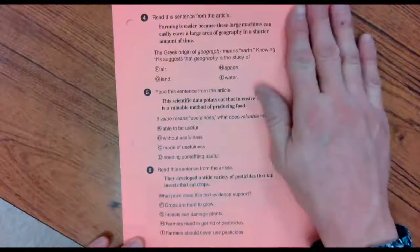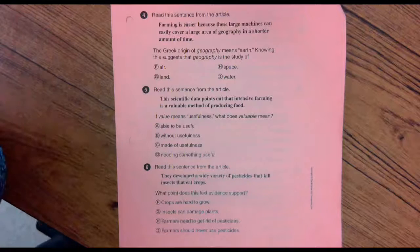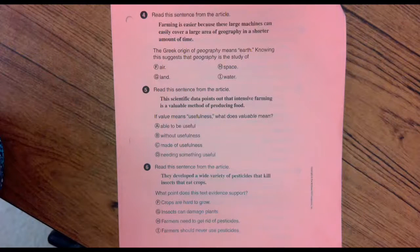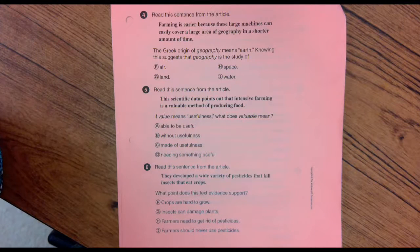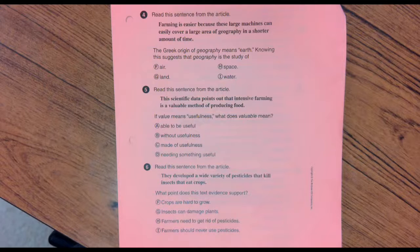Number four, read this sentence from the article. Farming is easier because these large machines can easily cover a large area of geography in a short amount of time. The Greek origin of geography means earth. Geo means earth. Knowing this suggests that geography is the study of air, land, space, or water.